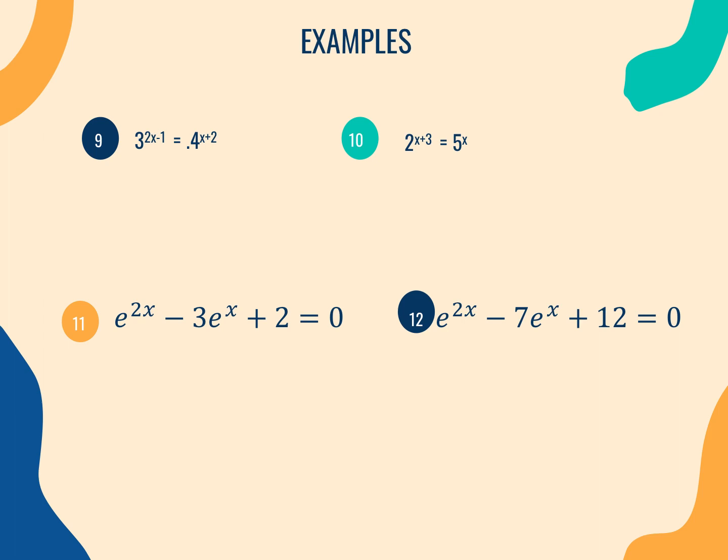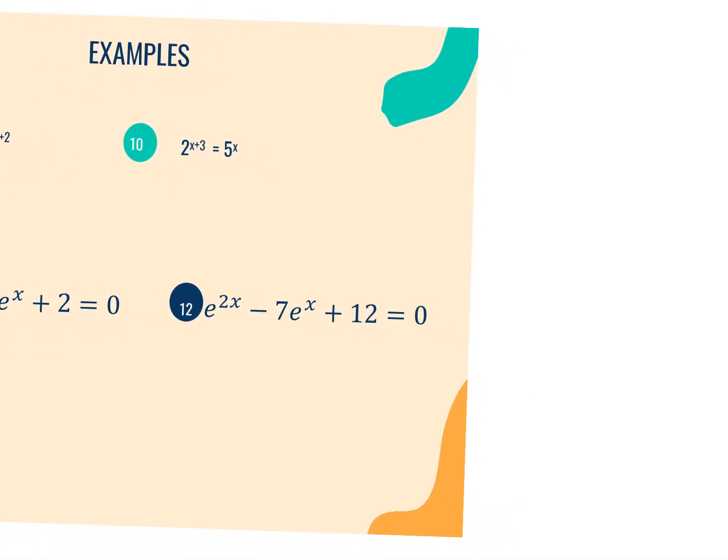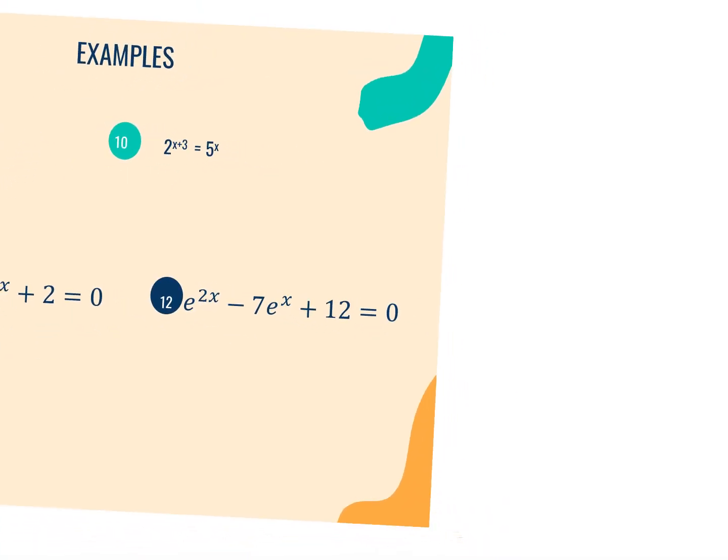Notice this is in exponential form, and I cannot try to change it to the same base. So what I'm going to do is add the natural log to both sides. You can also add log if you prefer, but because it's going to get messy, I'm going to add LN in front of each one of these.